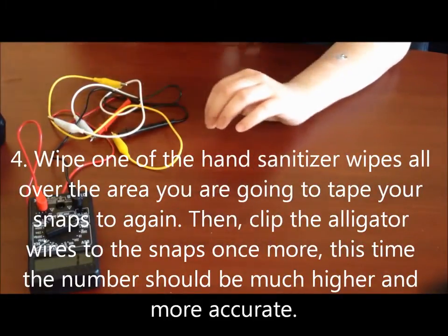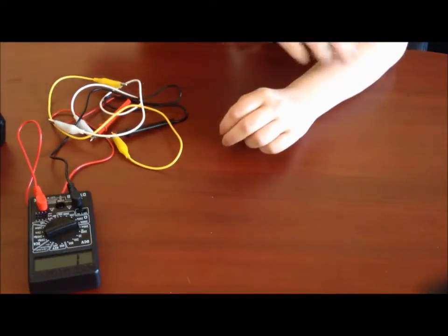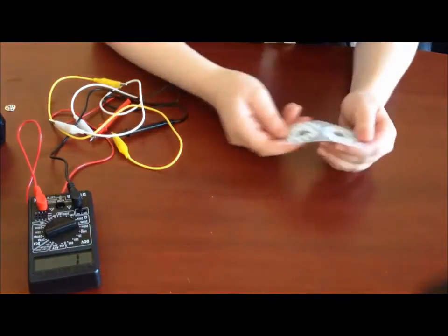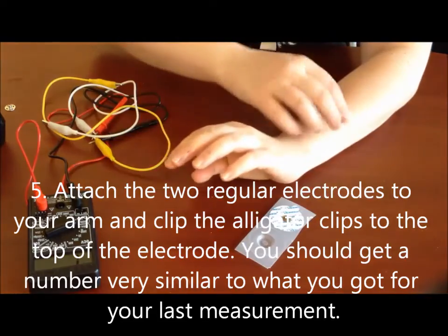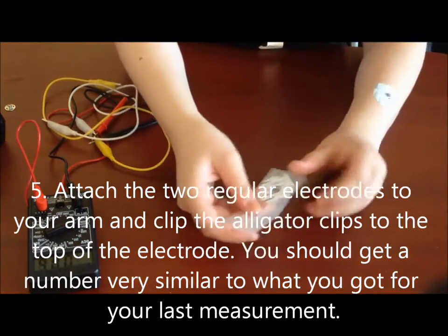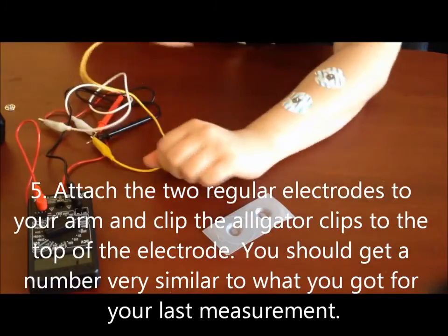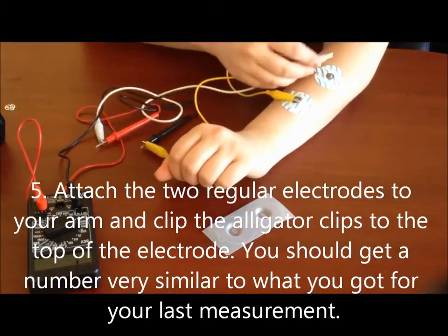And now you have actually made your own electrode. And just to test to see how successful the electrode you made is, you're going to take your two regular electrodes, you're going to clip them to your arm, and then you're going to take each of the alligator clips and just clip it direct to the electrode.